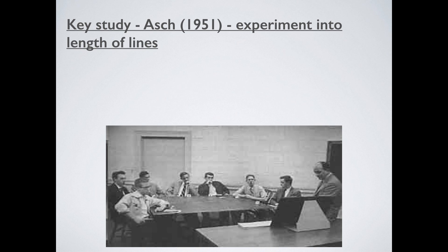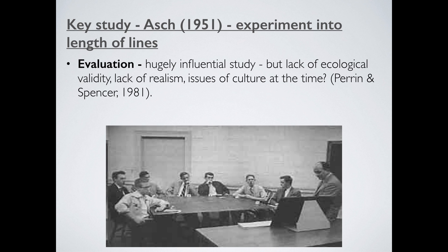Can we evaluate this? Of course. It's influential and a huge number of studies have built on it, but it ultimately lacks ecological validity — this is done in a lab after all, not very realistic. There's also a lack of realism: how often are you asked to compare the length of lines? Normally conformity is not so clear cut; it's a little more subtle. We also have issues of culture — 1950s America with McCarthyism and communist witch hunts may mean people didn't want to be the odd one out. Perrin and Spencer in the 1980s repeated the study with British students and found very, very low levels of conformity. So maybe it's just because of where and when Asch did his study, rather than reflecting conformity itself.